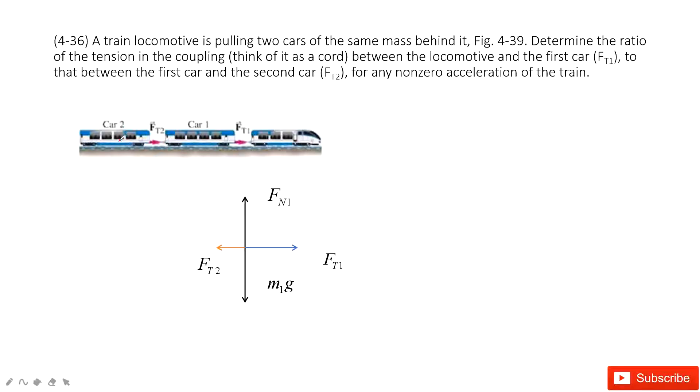Now we look at car 2. For car 2, first thing, we have gravity and then the normal force, ground to car 2. And also we have the tension from this cable, FT2.